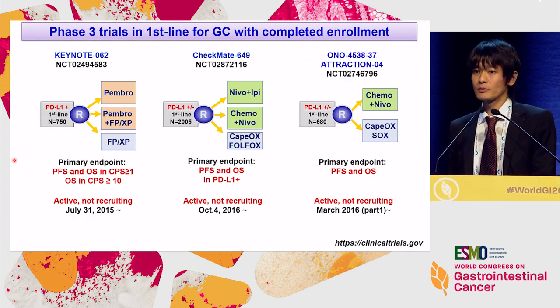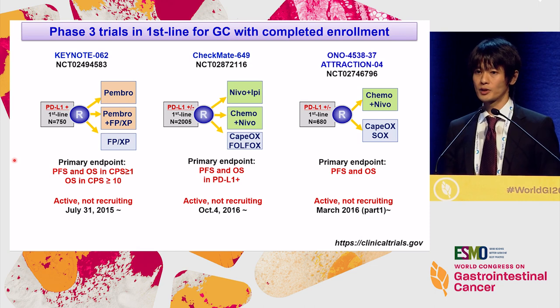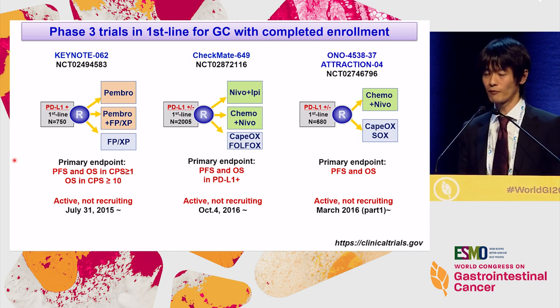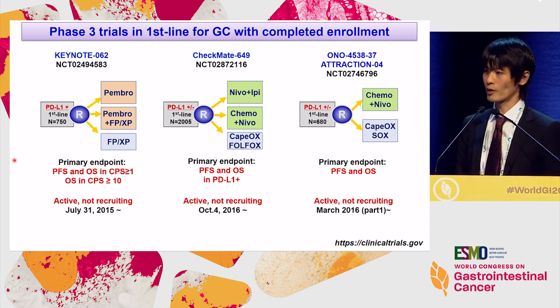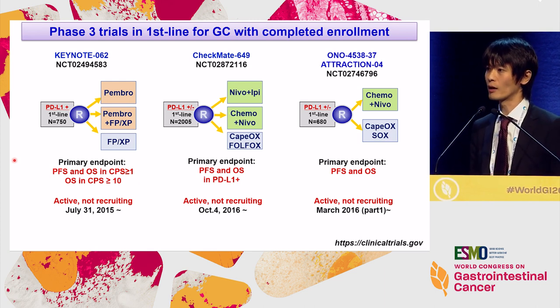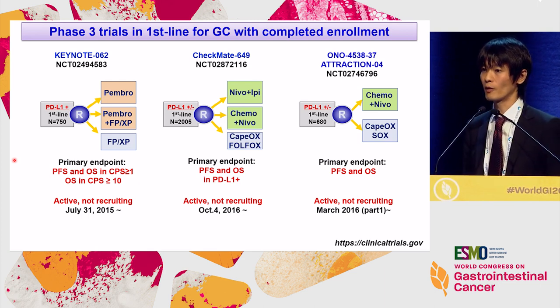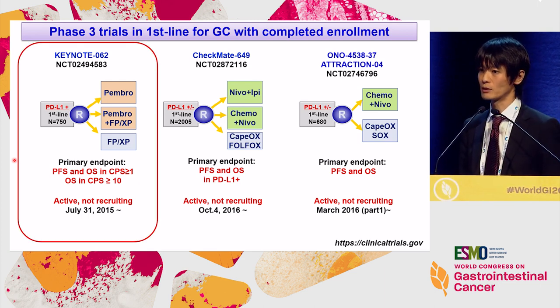Until now, three randomized controlled trials of checkpoint inhibitors in the first line have completed enrollment: Keynote 62, Checkmate 649, and Attraction 4. Today, we have results from Keynote 62.